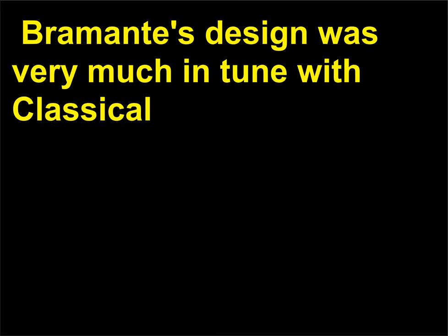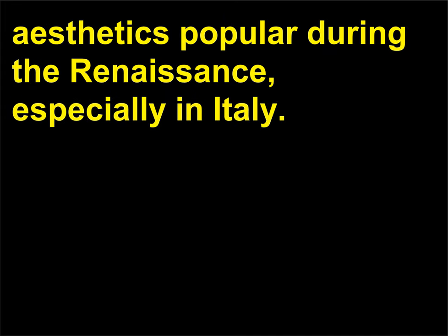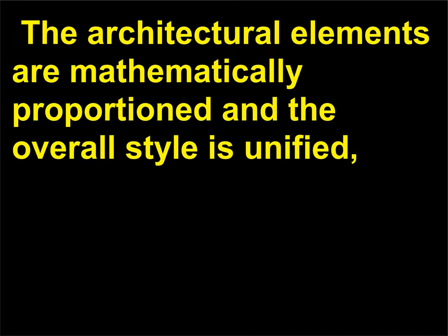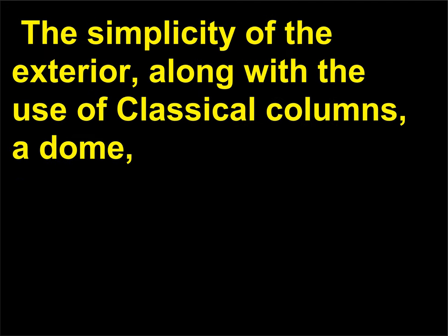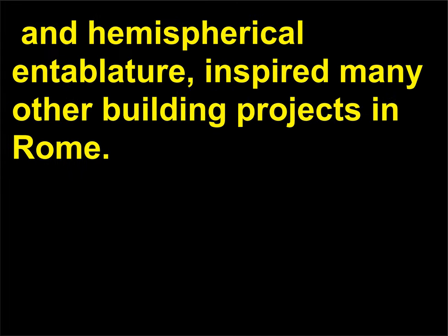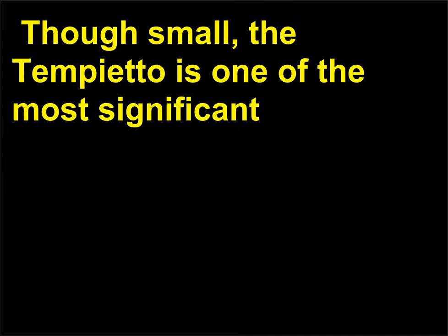Bramante's design was very much in tune with classical aesthetics popular during the Renaissance, especially in Italy. The architectural elements are mathematically proportioned and the overall style is unified, making the building almost like a work of sculpture. The simplicity of the exterior, along with the use of classical columns, a dome, and hemispherical entablature, inspired many other building projects in Rome. Though small, the Tempietto is one of the most significant examples of High Renaissance architecture in Italy.